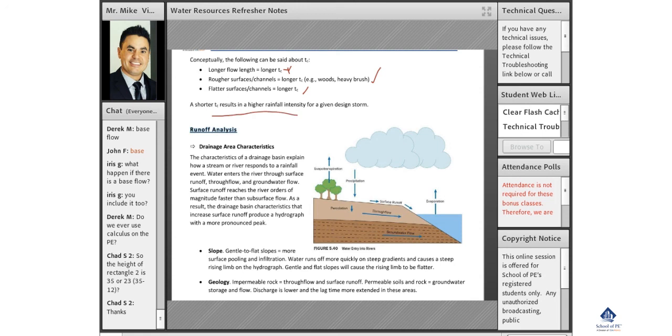Shorter TC results in higher rainfall intensity for a given design storm. As engineers, we don't like short TC's. We like long TC's.